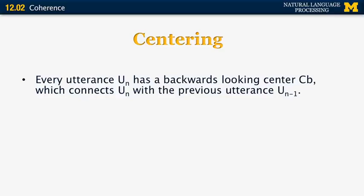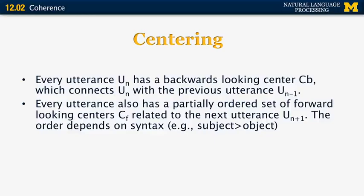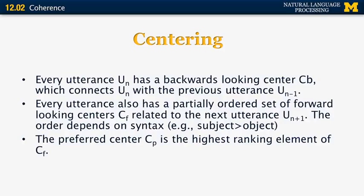The centering framework uses backwards-looking centers and forward-looking centers. Every utterance u_n has a backwards-looking center cb, which connects the current utterance with the previous utterance u_{n-1}. Every utterance also has a partially ordered set of forward-looking centers cf related to the next utterance, whose order depends on syntax — for example, subject salience is higher than object salience. The preferred center is picked among all forward-looking centers based on its highest salience score.